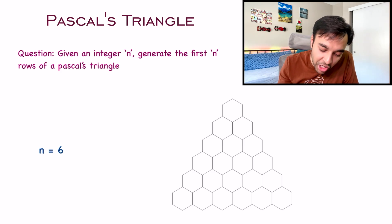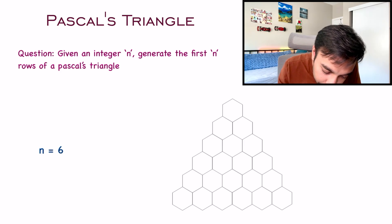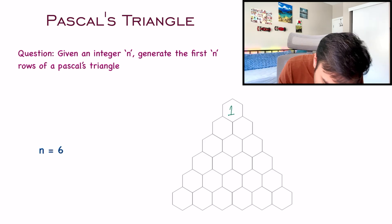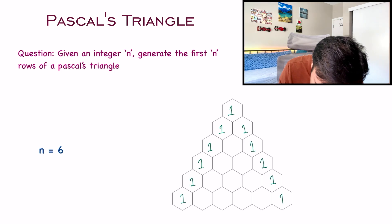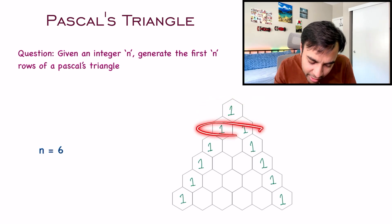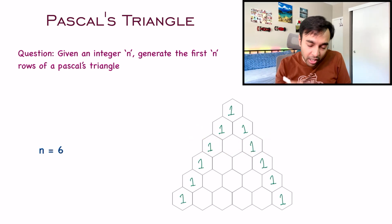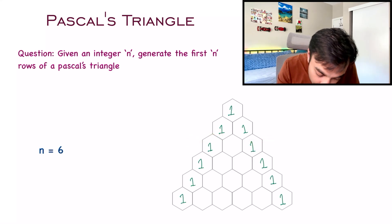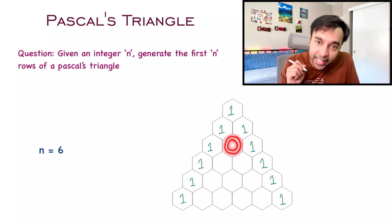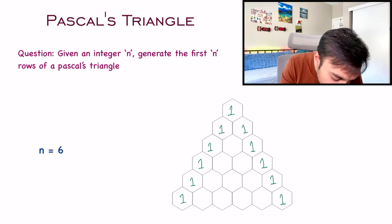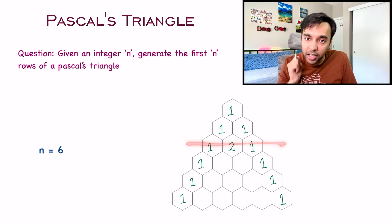To begin filling this Pascal's triangle, you always start with the element 1. For all subsequent rows, the first element and the last element will always be 1. So for every row, I can fill out the first and last element to be 1. As you can see, the first row is complete. The second row is also complete because you only had the first element and the last element. For the third row, you fill out the first and last element, but how do you derive the middle element? To find the middle element, just take a sum of the top two elements. So 1 plus 1 gives you 2, and your third row is complete.